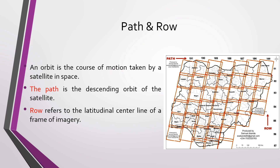An orbit is the course of motion taken by a satellite in space — the path the satellite follows as it rotates and moves. Path refers to the descending orbit of the satellite. Row refers to the latitudinal center line of a frame of imagery.